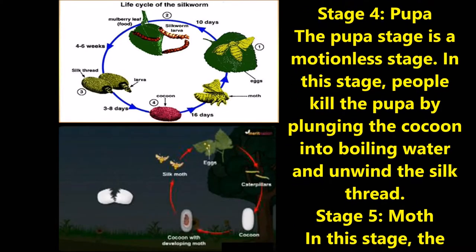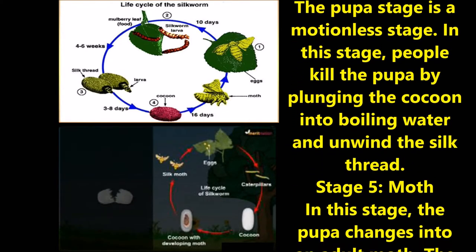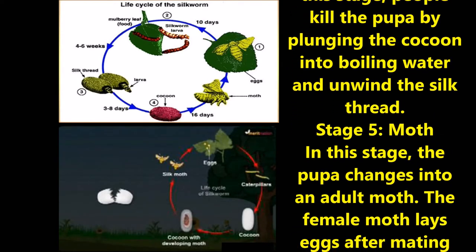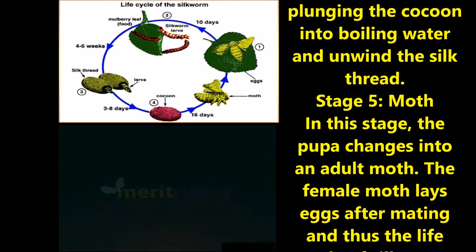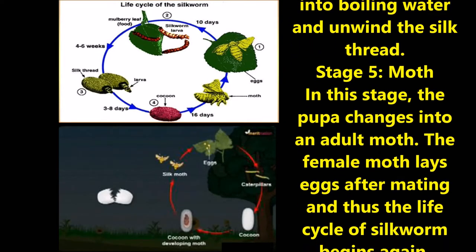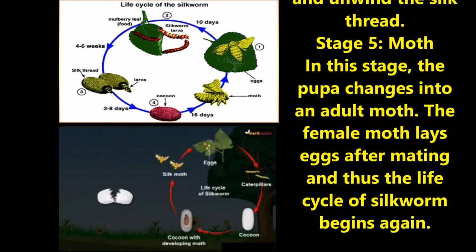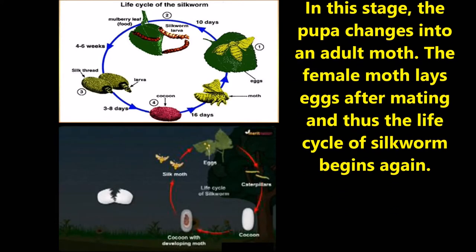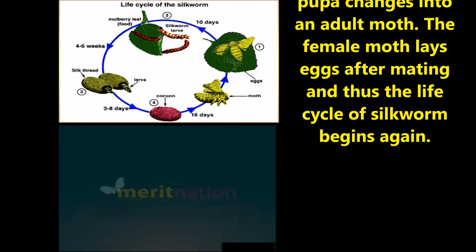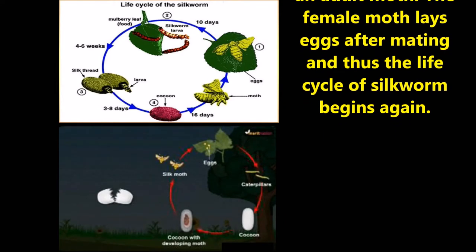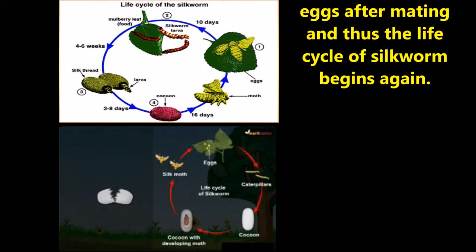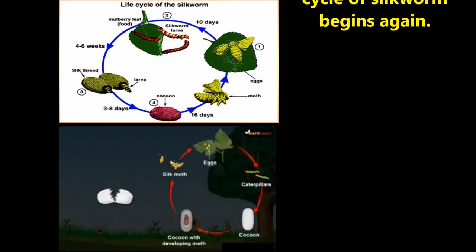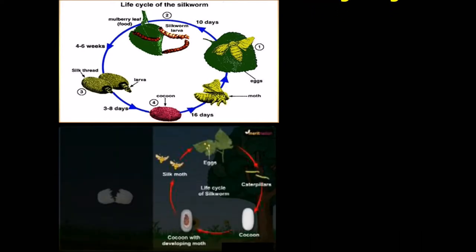Stage four - Pupa: The pupa stage is a motionless stage. In this stage, people kill the pupa by putting the cocoons into boiling water and then unwind the silk thread. Stage five - Moth: In this stage the pupa changes into an adult moth. The female moth lays eggs after hatching, and thus the life cycle of silkworms begins again.